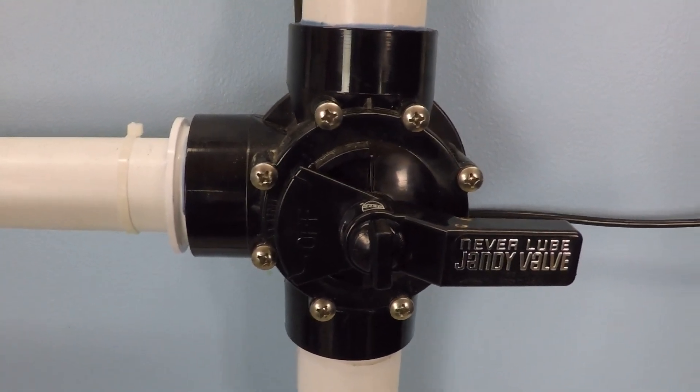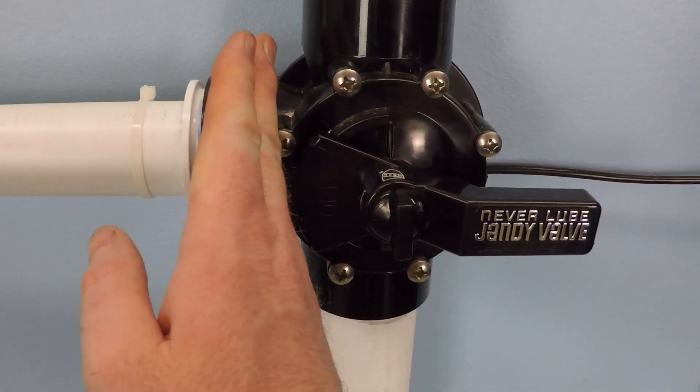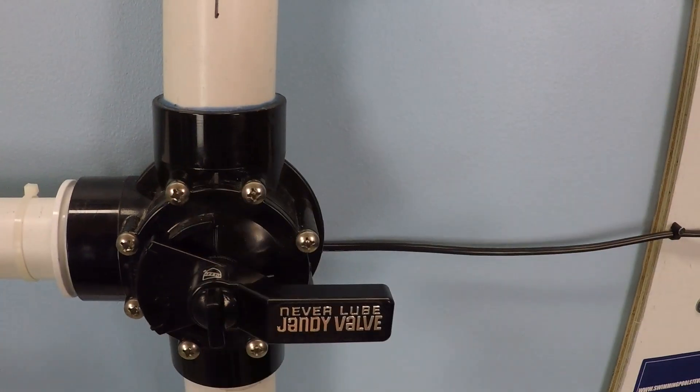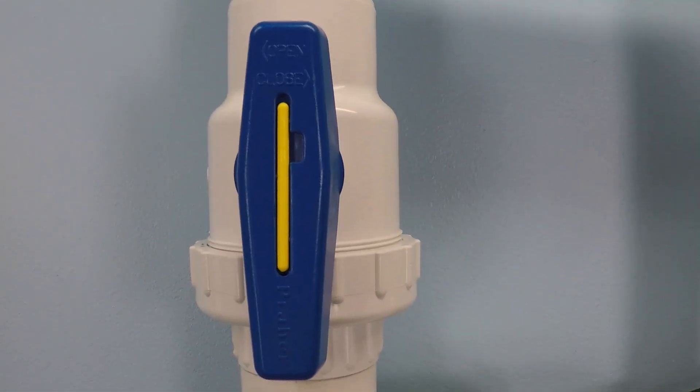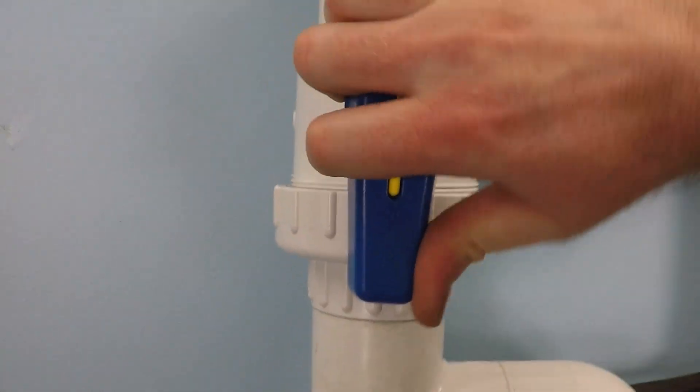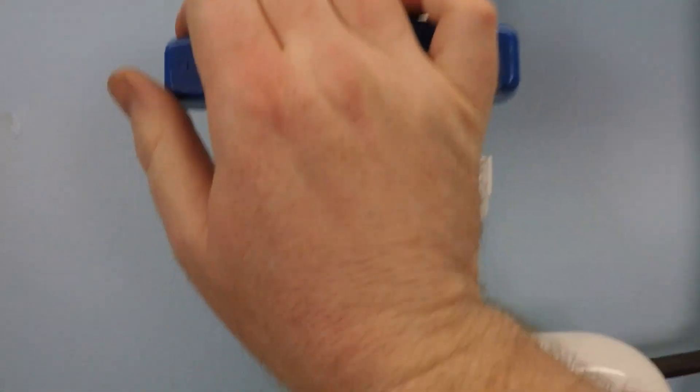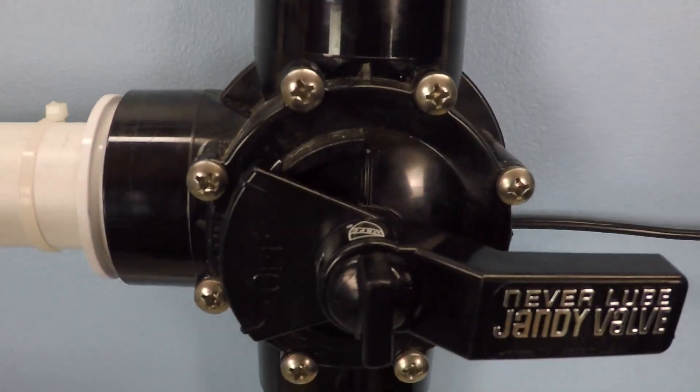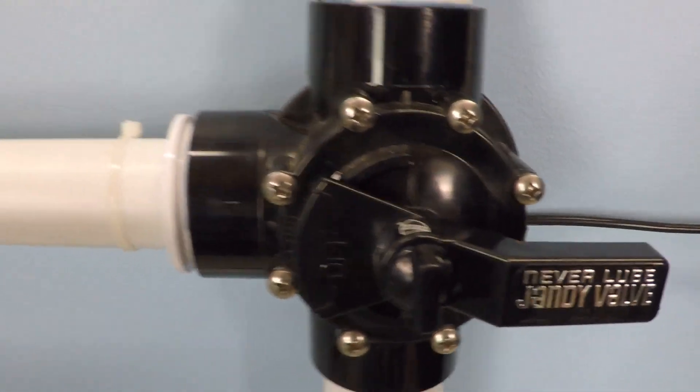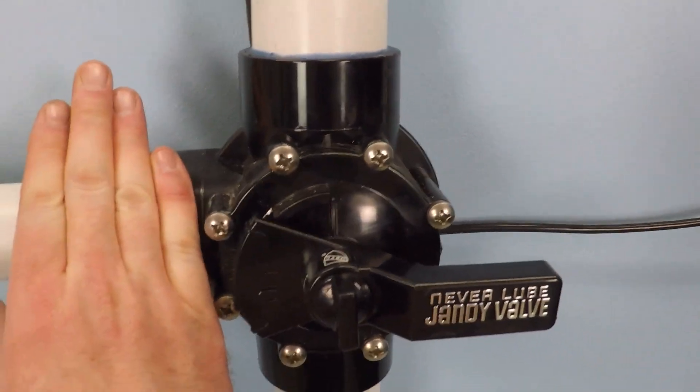And you might have one that doesn't have this section here. It's just straight through. And then it operates kind of like the ball valve in that the water goes through it or it doesn't. That would be the same idea down here with a Jandy diverter valve, even if it didn't have this piece here.